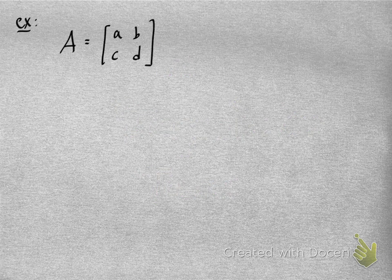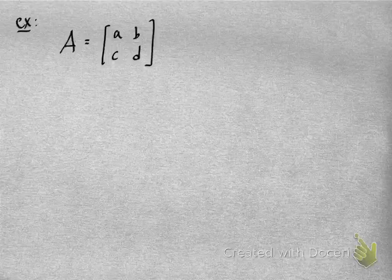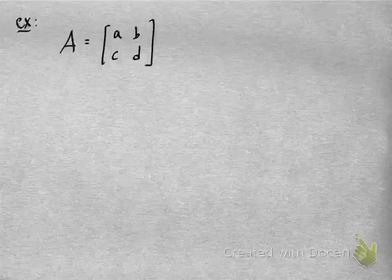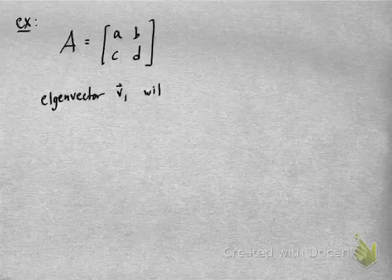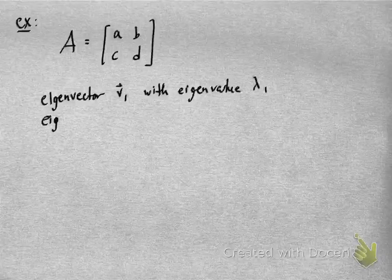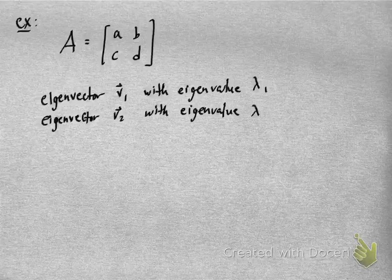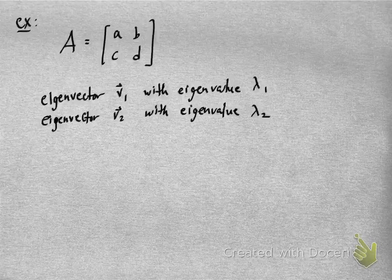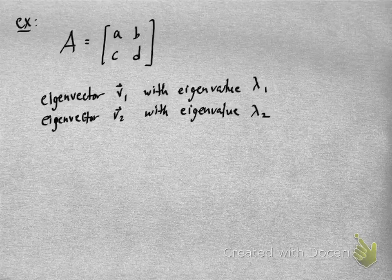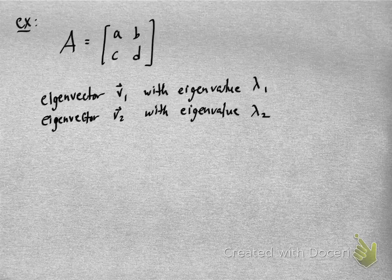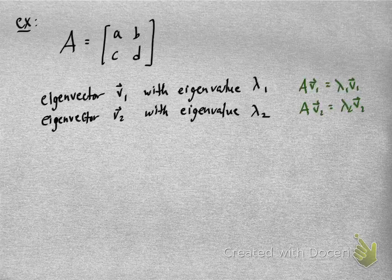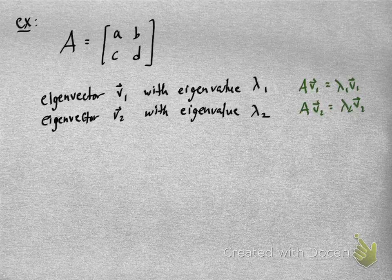Suppose I have a 2 by 2 matrix, and suppose I also have some linearly independent eigenvectors — V1 with eigenvalue lambda 1, and V2 with eigenvalue lambda 2. That tells me that A times V1 is lambda 1 times V1, and A times V2 is lambda 2 times V2.